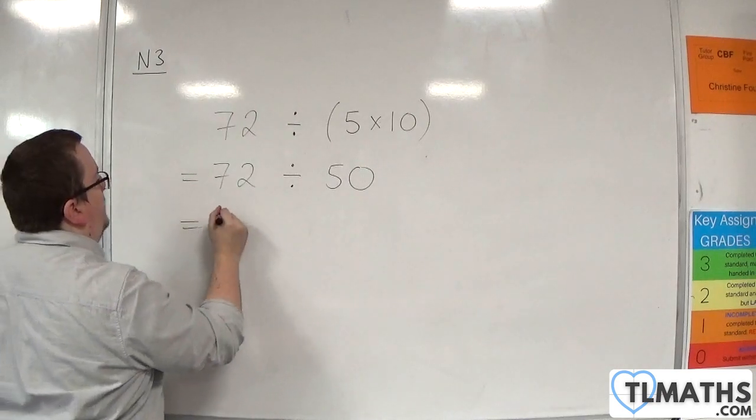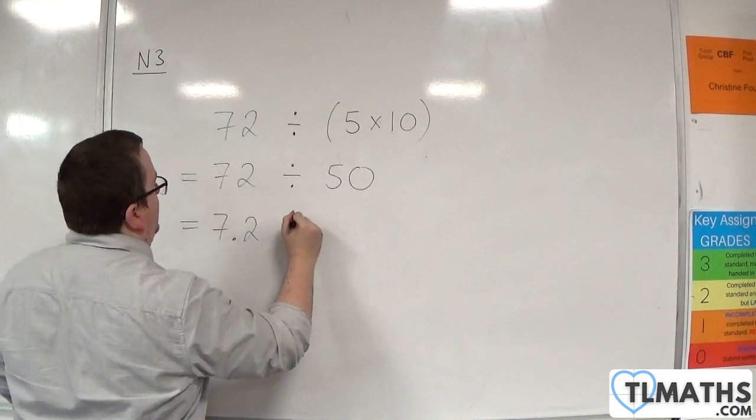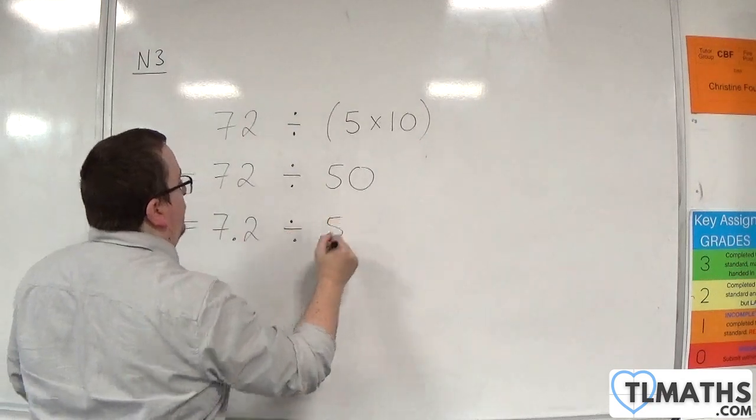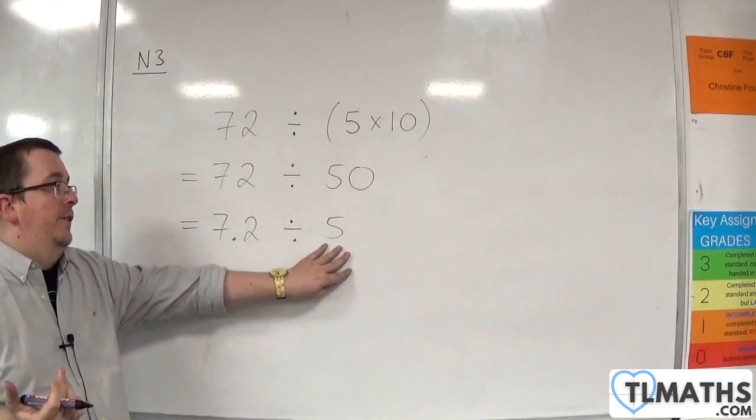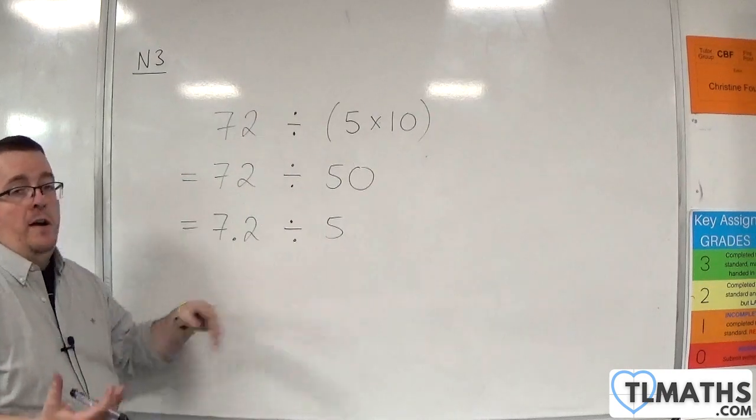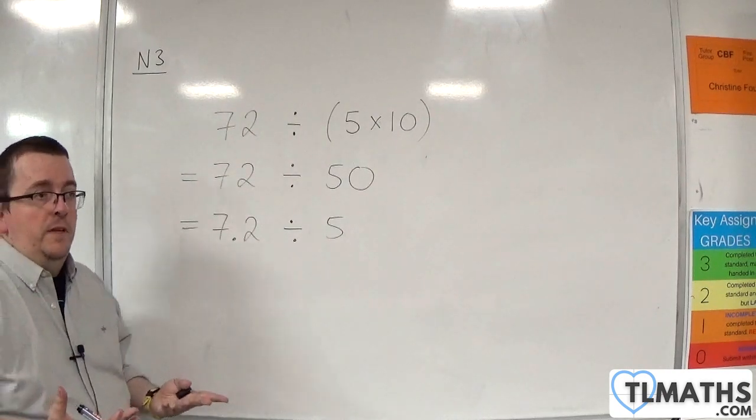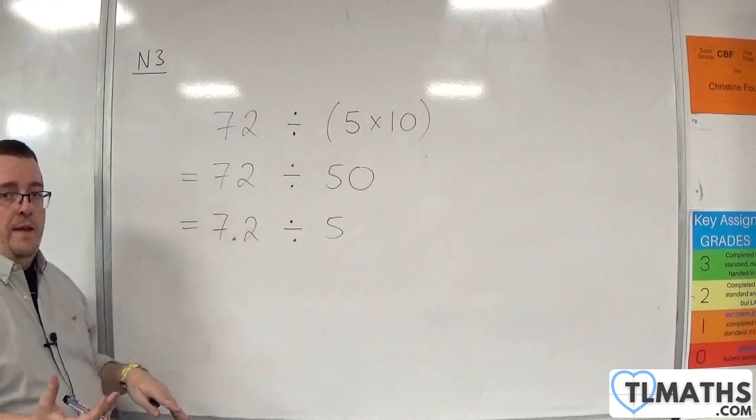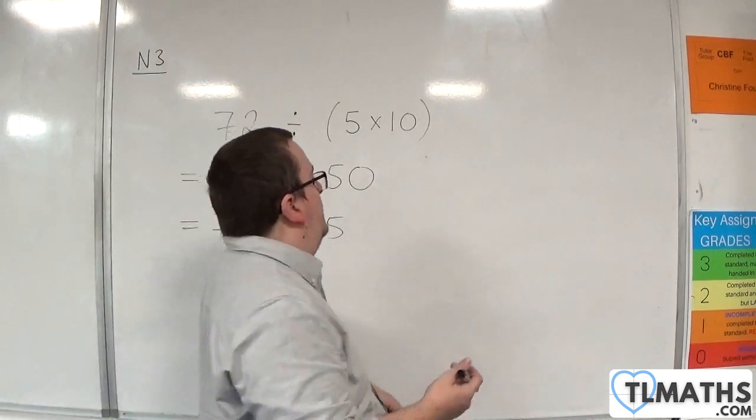So, I'm going to divide both by 10, which allows me to divide by 5 rather than dividing by 50. I'd prefer to be dividing by 5 if I can. So, that's a perfectly valid move here. So, 7.2 divided by 5.